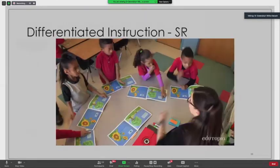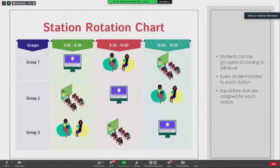Okay, that's a great example of station rotation in action. So study this illustration and notice that there are three groups of students and each group rotates to each station for 30 minutes. Meanwhile, time management is extremely important when implementing station rotation. And as you can see, students are grouped according to skill level. Every student rotates to each station and equal time slots are assigned for each station. I'm going to move quickly because we lost some time.